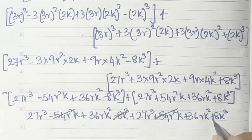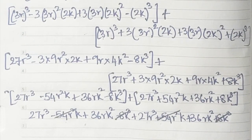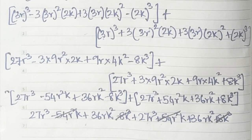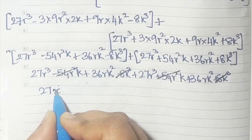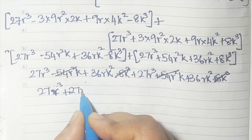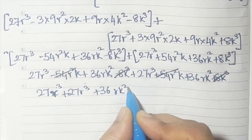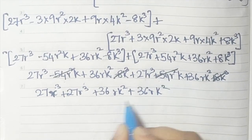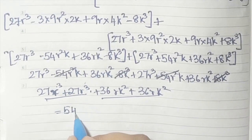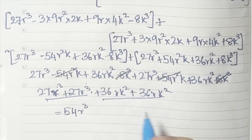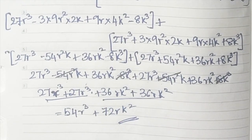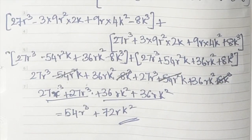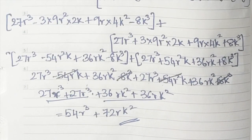What remains: 27r³ + 27r³ = 54r³, and 36rk² + 36rk² = 72rk². So your answer is 54r³ + 72rk². Similarly, there are two more sums — sum number 3 and sum number 4. Once you understand how to do sum numbers 1 and 2, you will be able to do sum numbers 3 and 4.